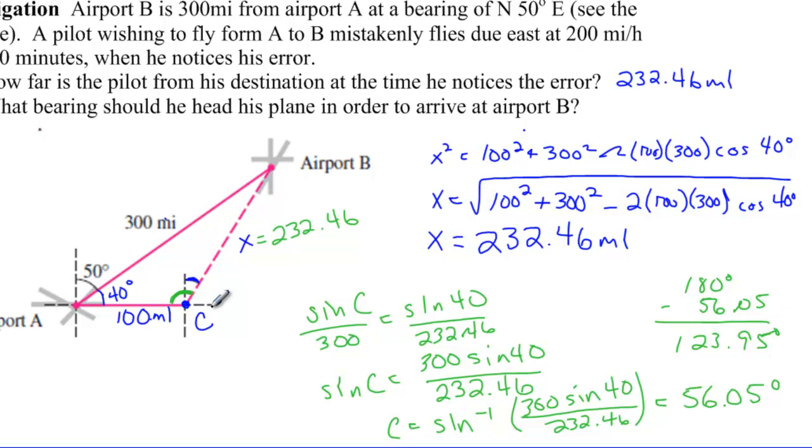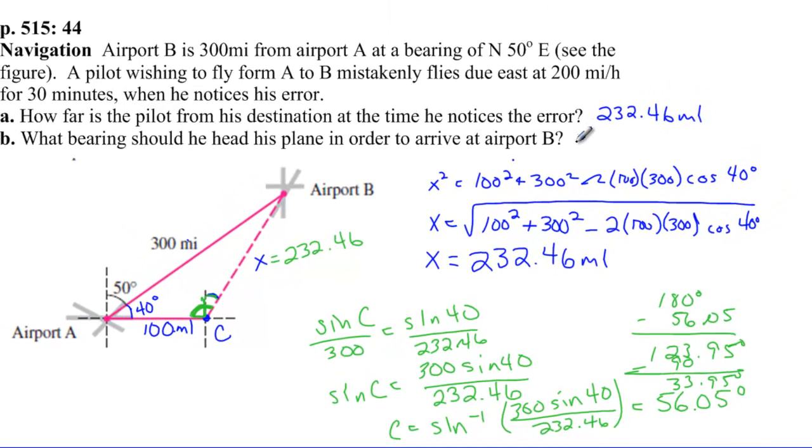And so, this angle here is 123.95. Well, if I take away the right angle, that will tell me my bearing here. And so, if I subtract 90 from this, that's going to give me 33.95 degrees. And so, my bearing should be north, because I'm heading north, 33.95 degrees east. And that would be my heading or bearing to get to airport B. And I would have to travel 232.46 miles to get there.